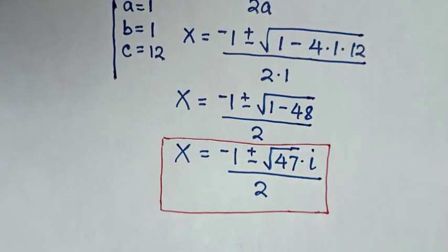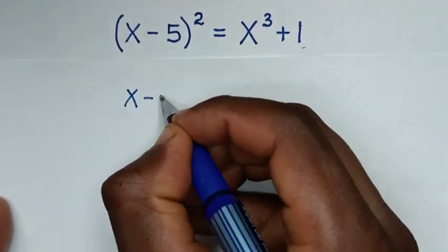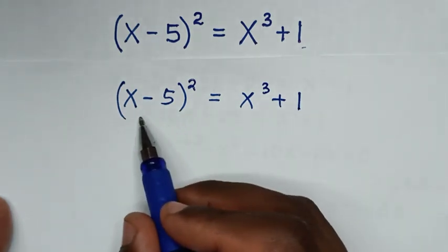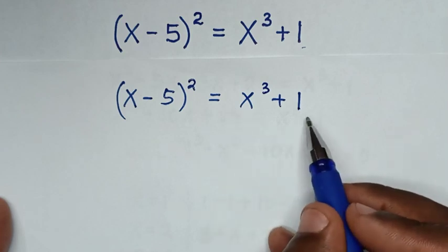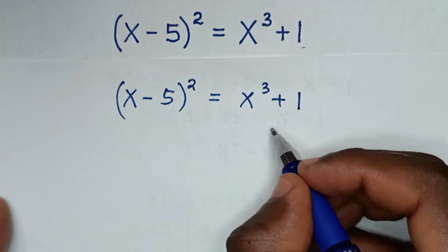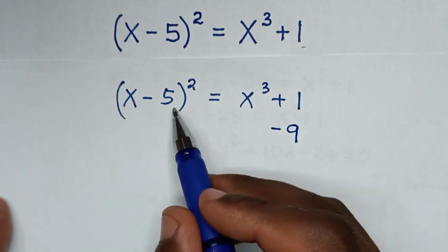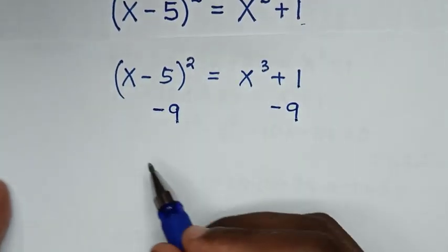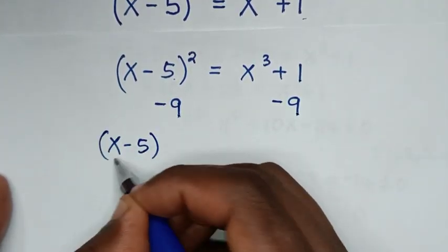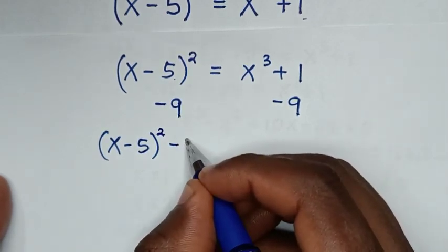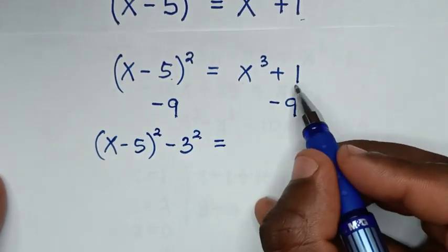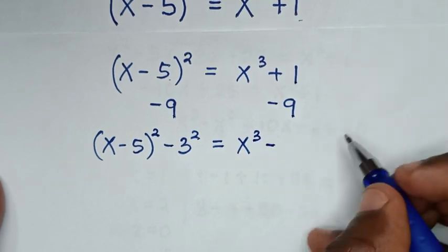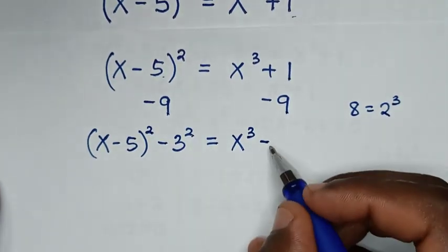Now let's solve by another method. From our problem (x - 5)² = x³ + 1, we rewrite the left side in the form of a perfect square and the right side in the form of a perfect cube. On the right side, to form a perfect cube, we subtract 9. We subtract 9 from both sides. So we get (x - 5)² minus 9, and on the right side x³ + 1 − 9 = x³ − 8, where 8 = 2³, so it becomes x³ − 2³.